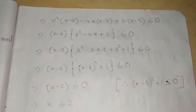Now (x minus 2)(x squared minus 2·x·2 plus 2 squared plus 1) less than or equal to 0. We complete the square to get (x minus 2)((x minus 2) squared plus 1) less than or equal to 0. Since (x minus 2) squared plus 1 is always greater than 0, we get x minus 2 less than or equal to 0, so x less than or equal to 2. The greatest value of x is 2.